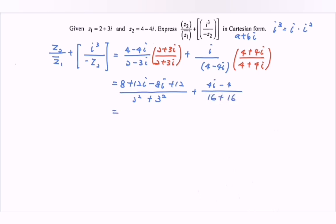Kindly simplify the situation. We have 20 + 4i over 4 + 9, so we have 13. Plus, we have negative 4 over 32 plus 4i over 32.